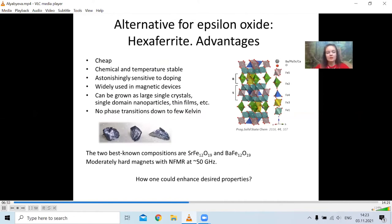They are chemically and temperature stable. They don't have any phase transitions from several hundreds of Kelvin down to a few Kelvin, at least no diffusive phase transitions. They can be grown in whatever form you like, as single crystals, as nanopowders, as thin films, etc.